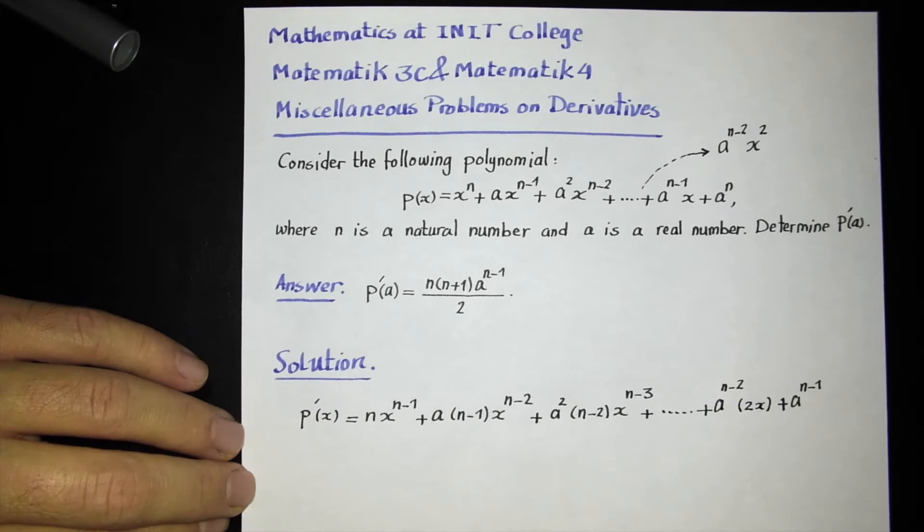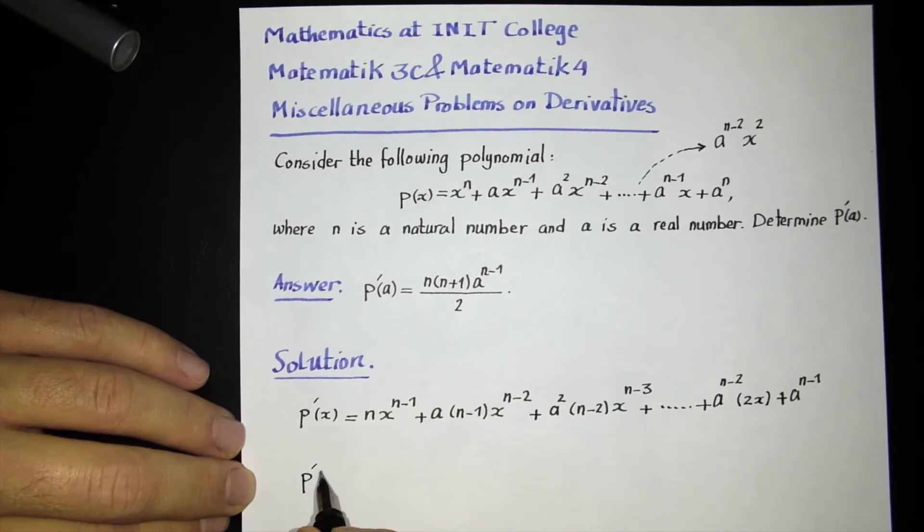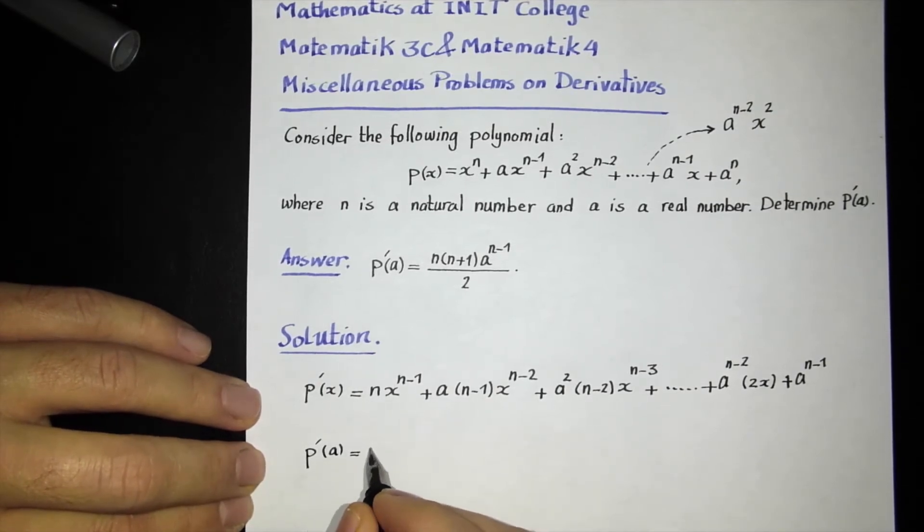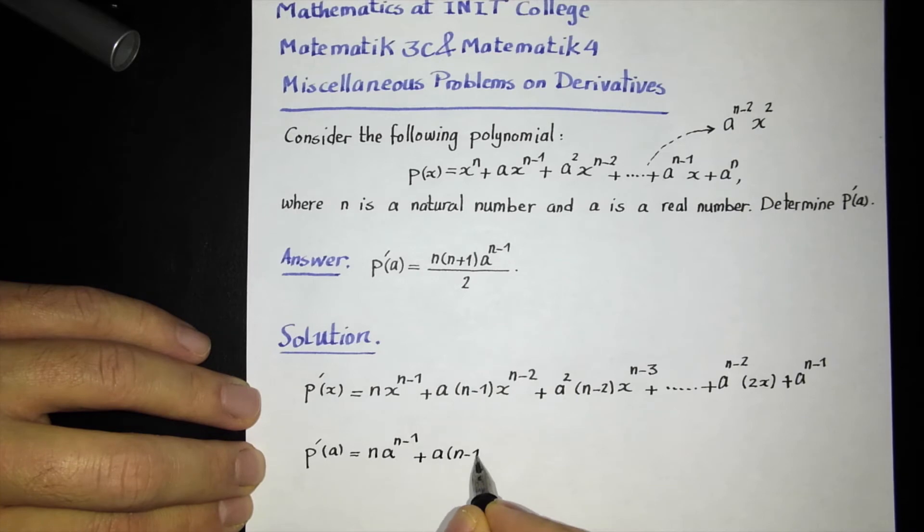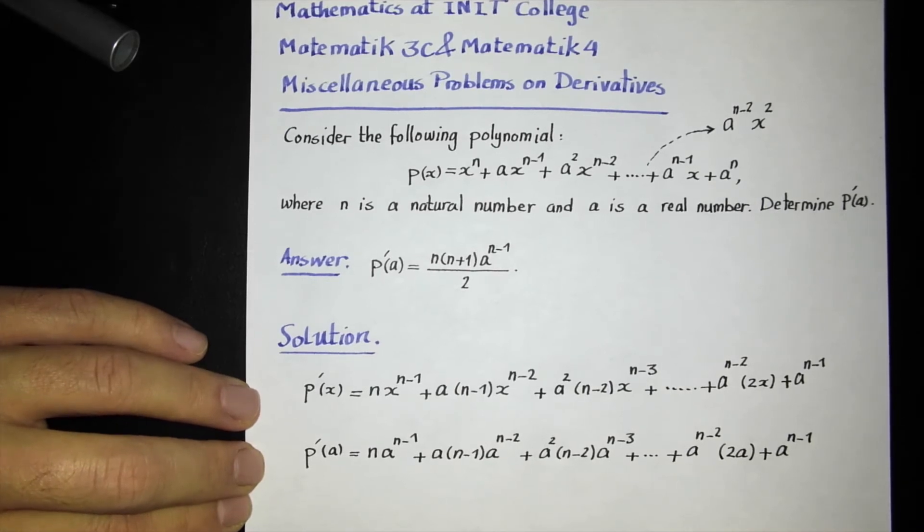Now that the derivative is found, I need to replace x in my derivative with a. So I calculate P'(a). Instead of x, I put a, so it becomes n times a to the n minus 1 plus a times (n-1) times a to the n minus 2. The next term is a squared times (n-2) times a to the n minus 3. I continue to this point: a to the n minus 2 times 2a. And finally, there is no x in the last term, so I just copy and paste the last term itself, a to the n minus 1.